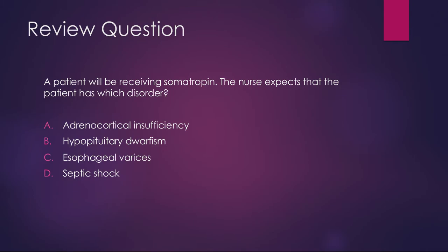A patient will be receiving somatropin. Which disorder do you expect your patient to have? The answer is B — hypopituitary dwarfism.